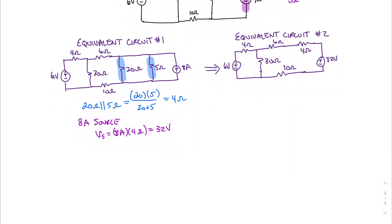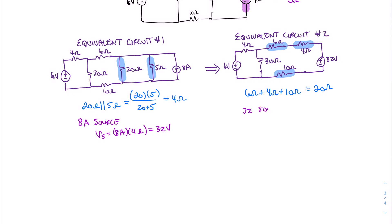Now we can see that we have three resistances in series: our 6-ohm resistor, our 4-ohm resistor, and our 10-ohm resistor. You might wonder if the 10-ohm resistor is truly in series — and yes, it is, because all of these resistors share the same current. It doesn't matter whether this resistor is below or above this voltage source. If we were to move this resistor above the voltage source, we could easily see that the 6-ohm, 4-ohm, and 10-ohm resistors are all in series, totaling 20 ohms. Now we can transform our 32-volt source into a current source.